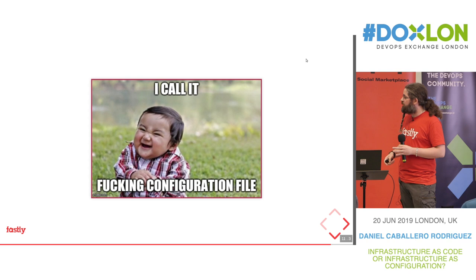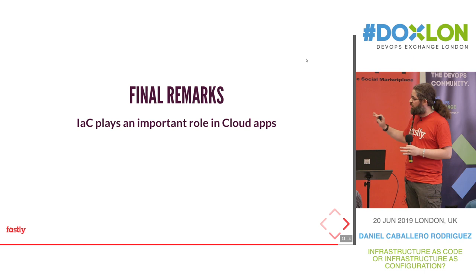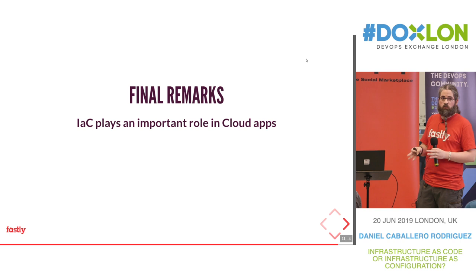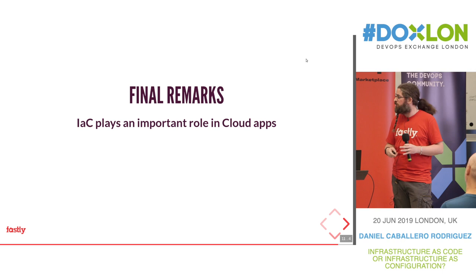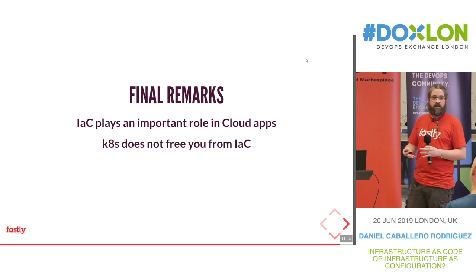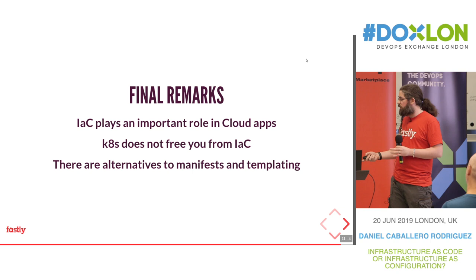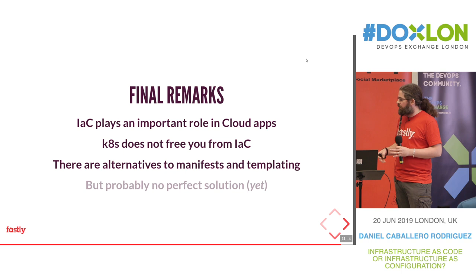Final messages: Infrastructure as Code still plays an important role when you are deploying cloud applications or cloud infrastructure. Kubernetes is not a magical solution — you still need to deal with your application dependencies. There are alternatives to manifests and templating if you are not happy with that or if it's not enough for your needs. But there is no perfect solution — you normally need to study each case and find the one that fits best in your use case.